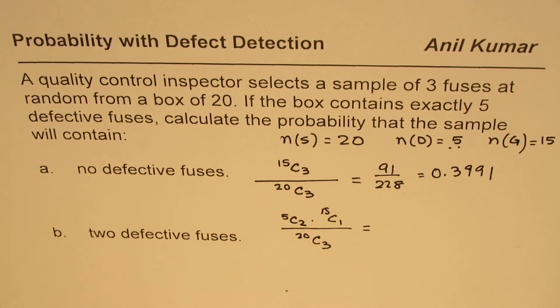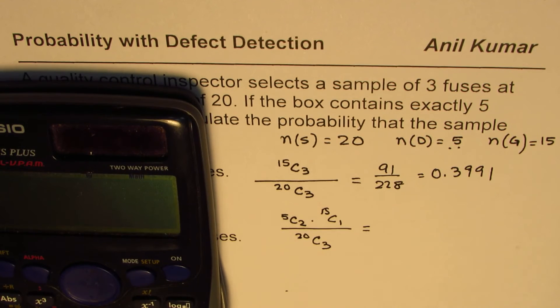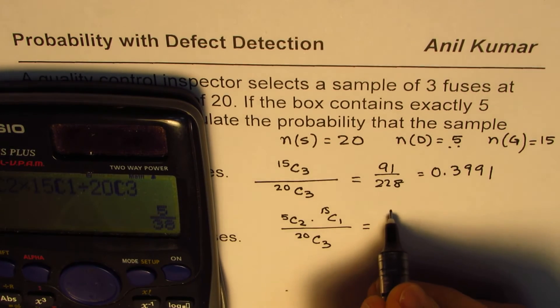And that becomes the answer. So the solution will be 5C2 times 15C1. Use calculator, that is what I prefer you to do. And then you can divide this by 20C3.